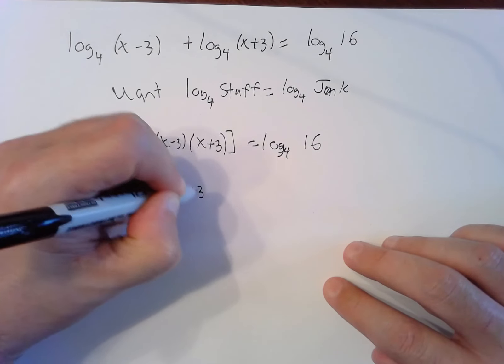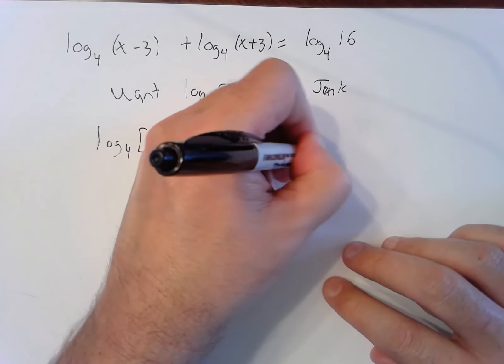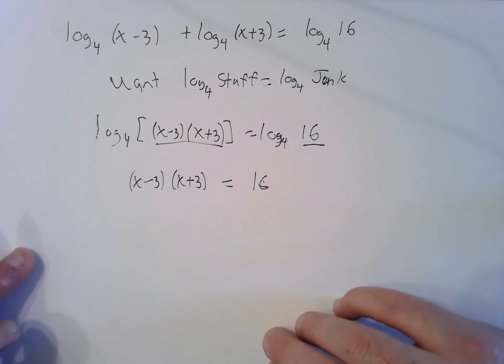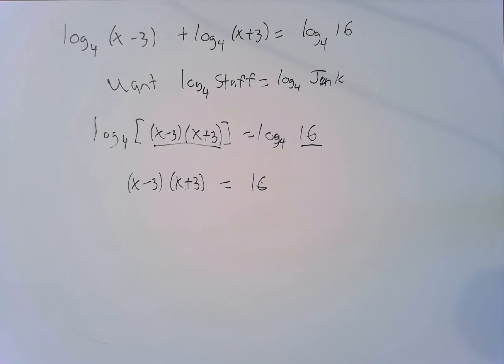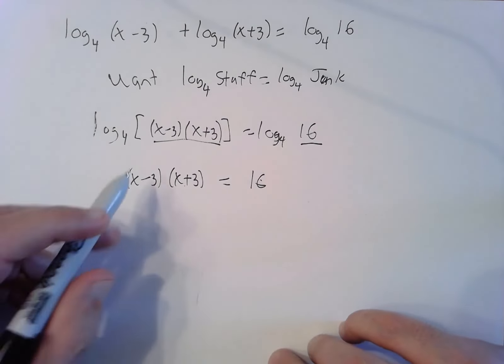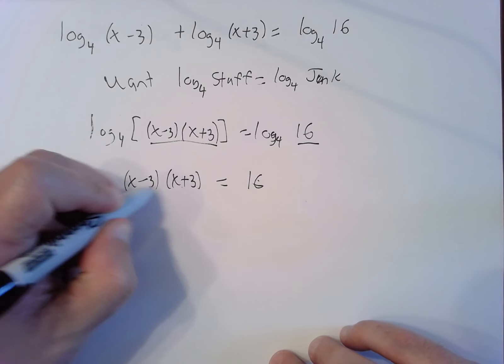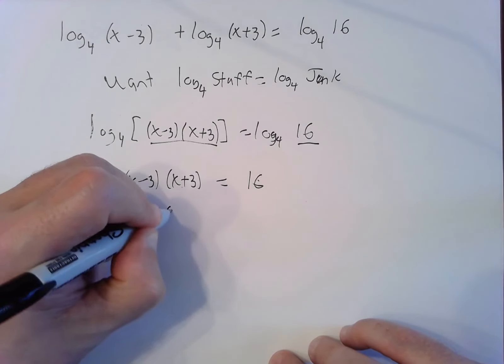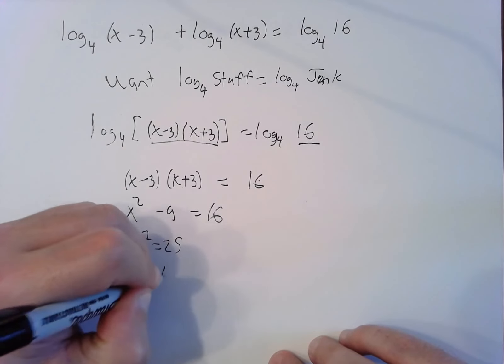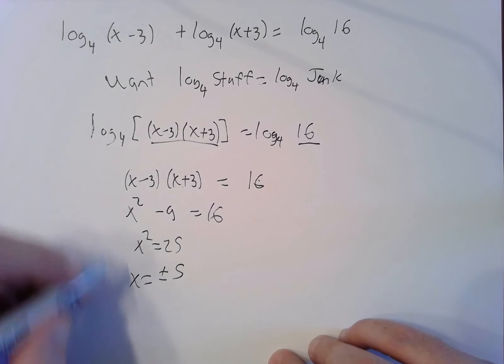Now we can set the insides equal. I can say x minus three times x plus three equals 16. Inside equals inside. That's a quadratic equation. Let's foil out here, that's just difference of squares formula. We're going to get x squared minus nine equals 16, which means x squared is 25, so x is plus or minus five.